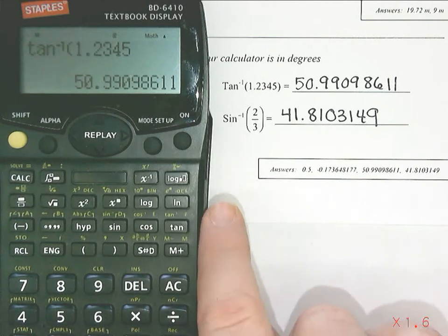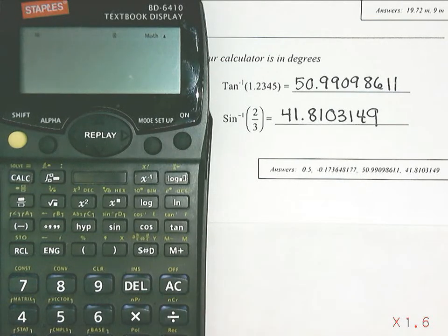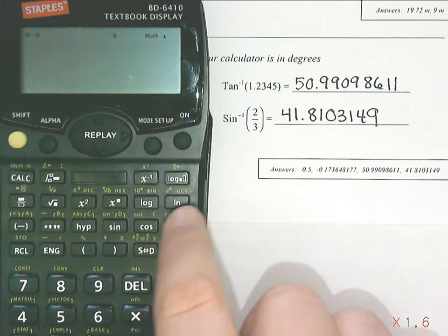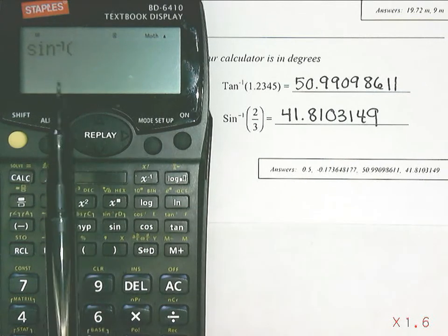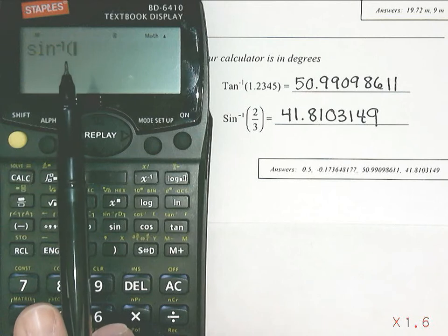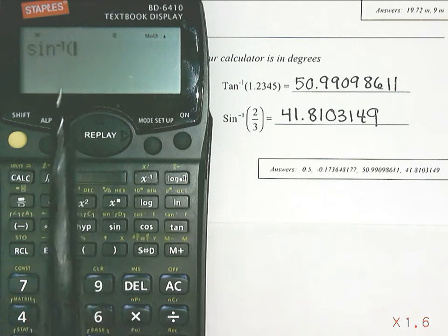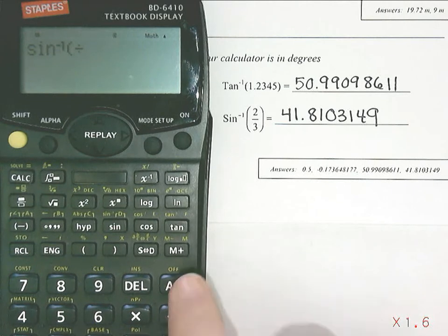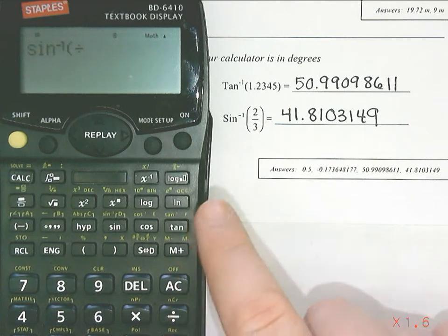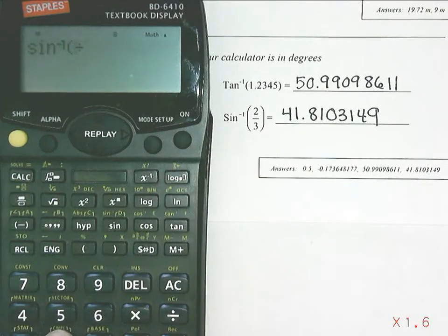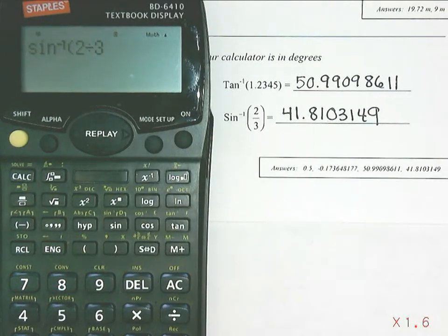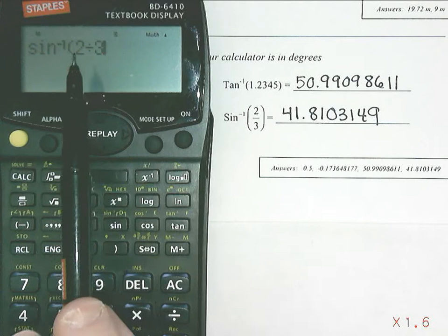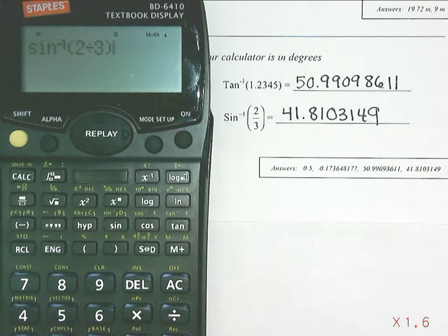To do the inverse sine of 2 over 3, I'm going to do my yellow button and sine, and then very important to have a bracket. If you do not have a bracket on your calculator, you should put one in, and then 2 divided by 3. So sine, bracket, 2 divided by 3. You can close the bracket or not, it's up to you, and then press equals to get the same answer that we had before.